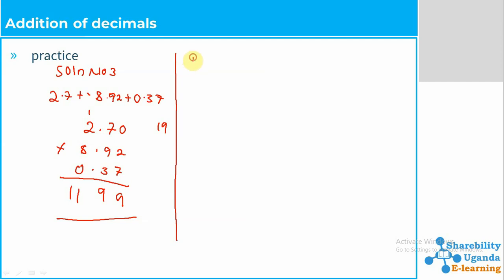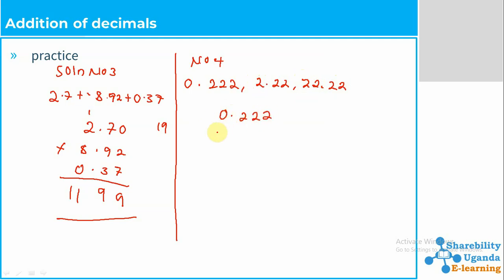Now solution number four. We have 0.222, then 2.22 — here should be a zero — then 22.22. We arrange them, filling in zeros where needed so all decimal places are aligned correctly.